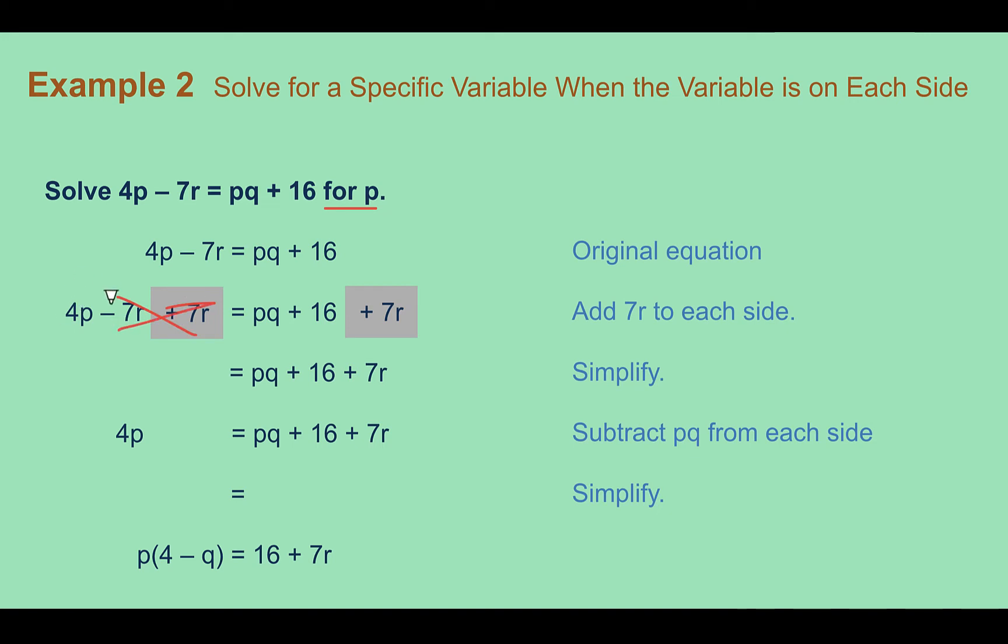So 4p is equal to now pq plus 16 plus 7r. There are no like terms here so I can't combine anything together. Now as I said before, when there's more than one instance of this variable you want to solve for, you need to get them on the same side. So we need to subtract pq from both sides. That way I have my p terms both on the same side, and then positive pq minus pq makes zero so they would disappear. So I'm left with 4p minus pq equals 16 plus 7r.